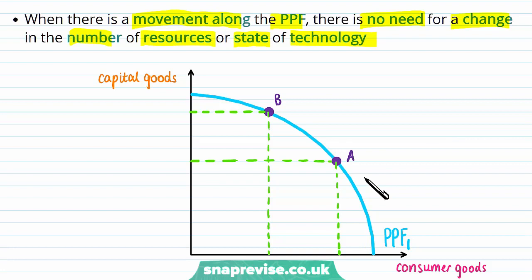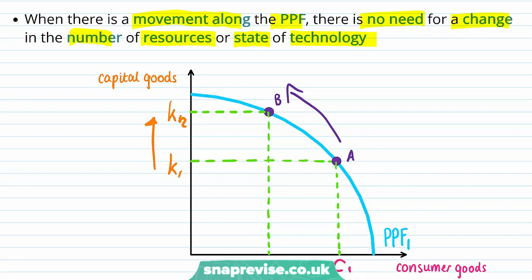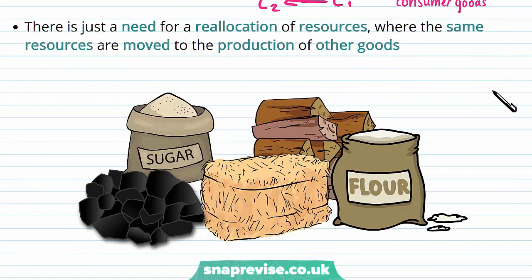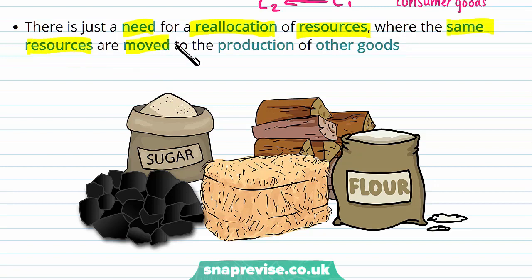So suppose we're moving from A to B — we are going to be increasing our capital goods from K1 to K2, and decreasing our consumer goods from C1 to C2. The movement along the PPF curve from A to B is not changing the number of resources we have in the economy; it's actually a reallocation of the resources that we have in the economy.